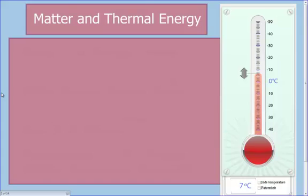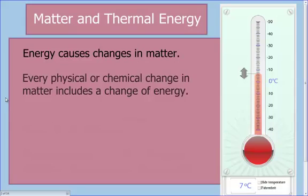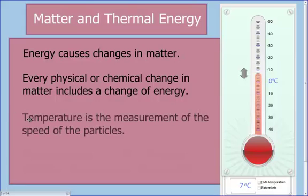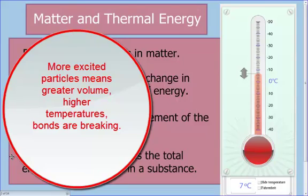Before we get into the details of the changes of state, we have to understand matter and thermal energy. Energy is what causes the matter to actually change, and every physical or chemical change in matter includes a change in the matter's energy. Temperature is the measurement of the speed of the particles. Thermal energy, or heat, is the total energy of the particles in a substance — how fast they're vibrating tells us what state they're in. If they get more excited, the heat energy is going up, the particles are getting more excited, they're spreading out, and the volume is increasing.